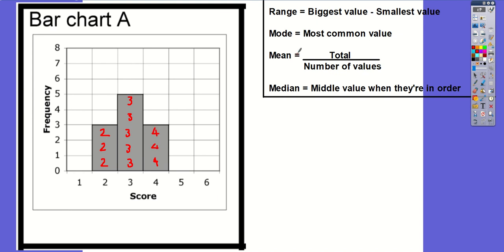Now I'm in a better position to get the three averages and the range. I'm going to start with the easiest to work out — the range first of all. The range is the biggest value minus the smallest value. Looking at the scores I'm getting, the biggest score I got was a four and the smallest score I got was a two. So the range is four minus two, which is two.